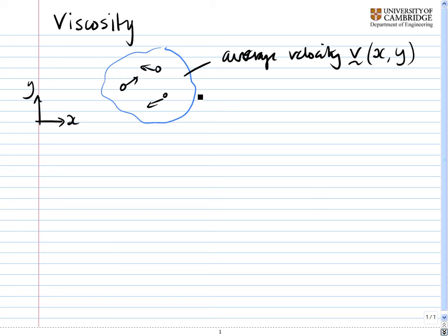Now let's imagine that these molecules in particular have an average velocity that's quite large in the x direction. So that's just v subscript x is quite large.